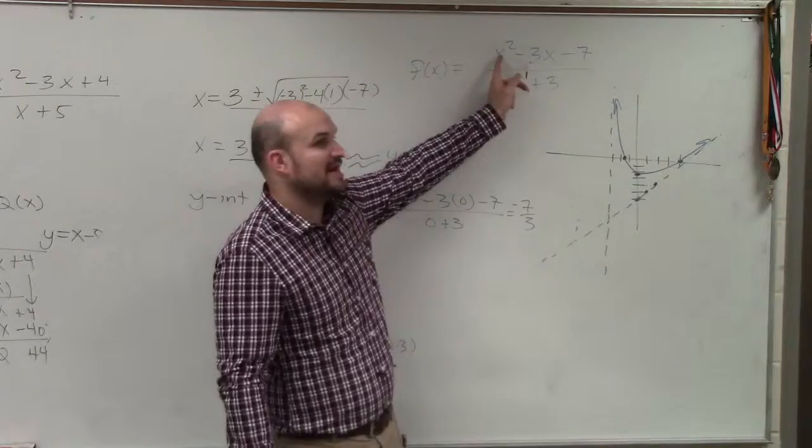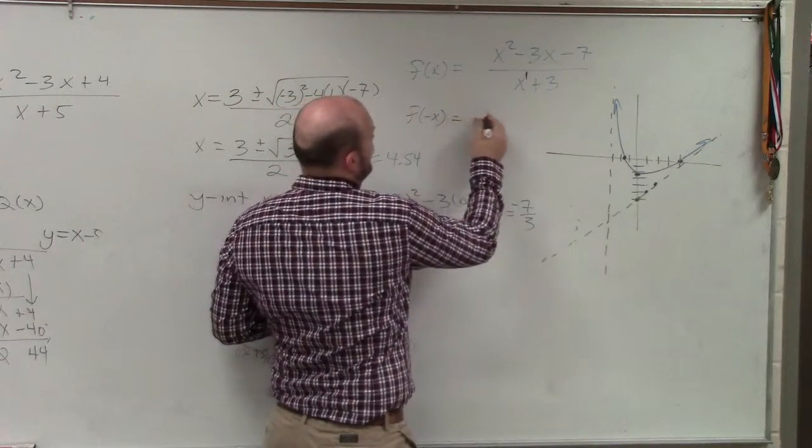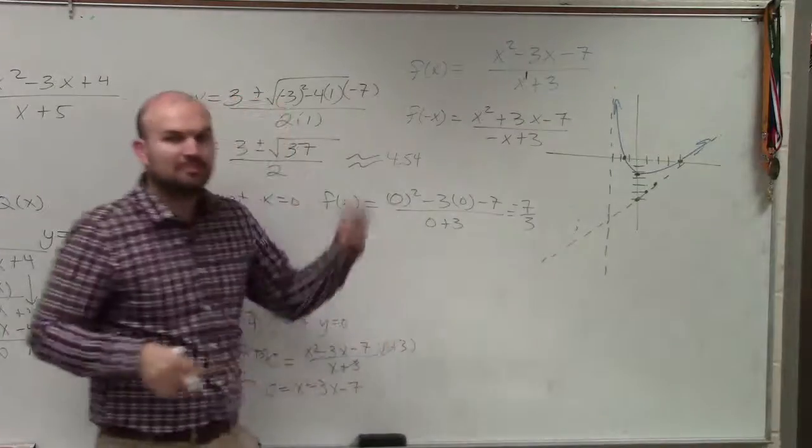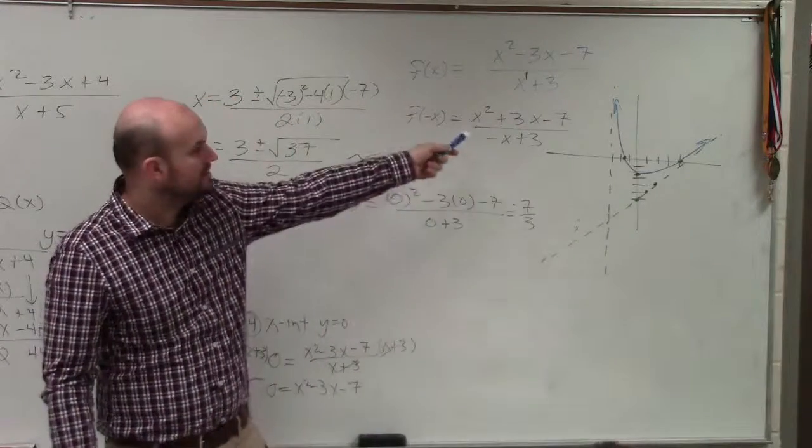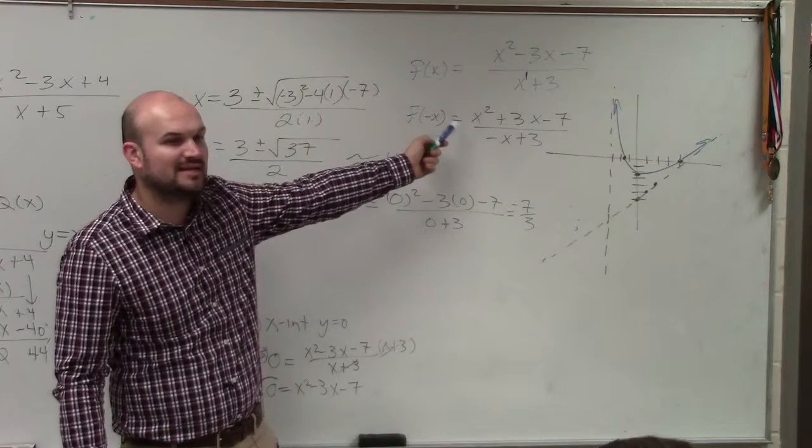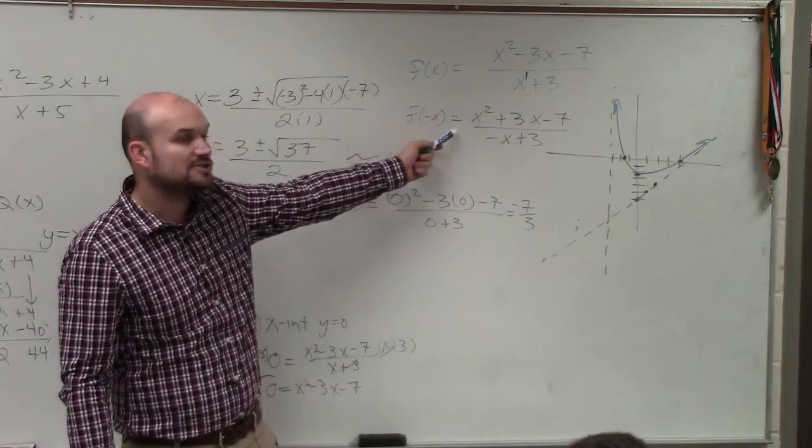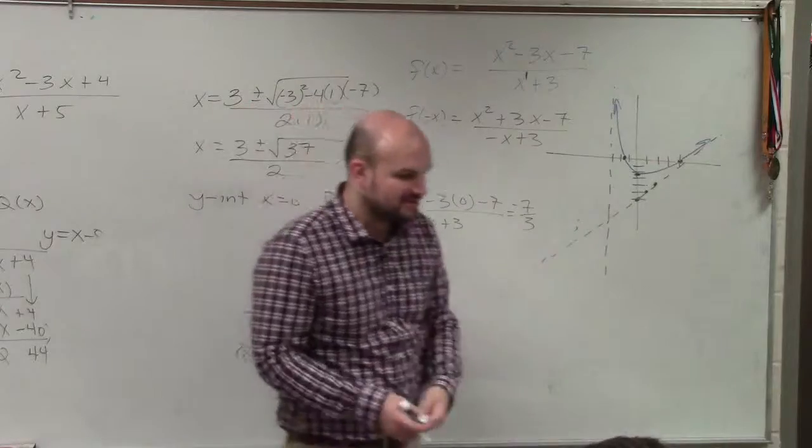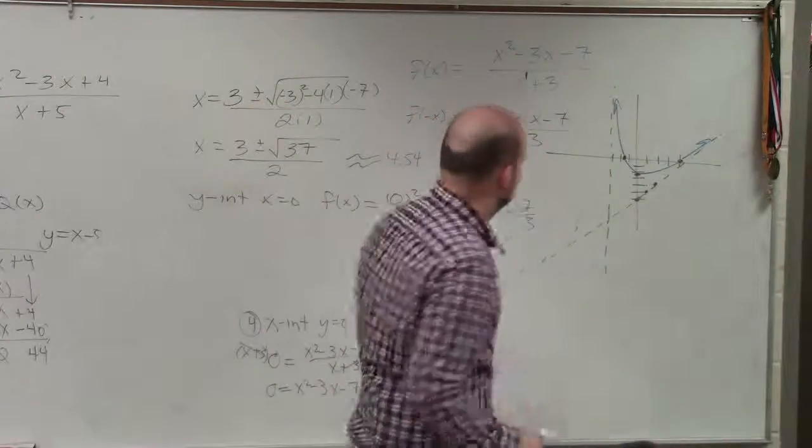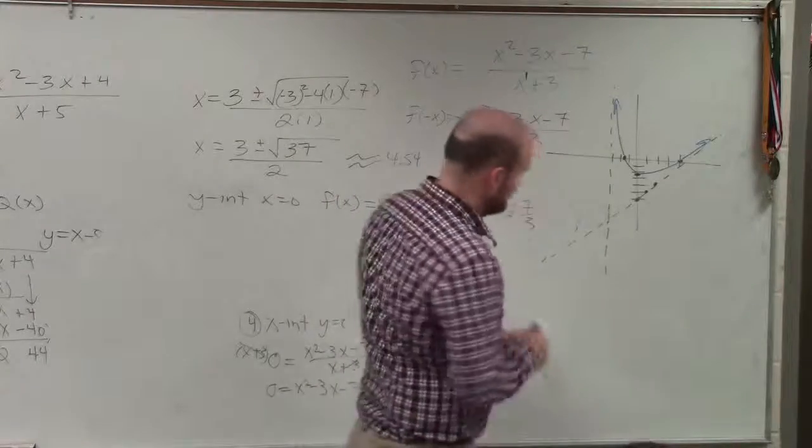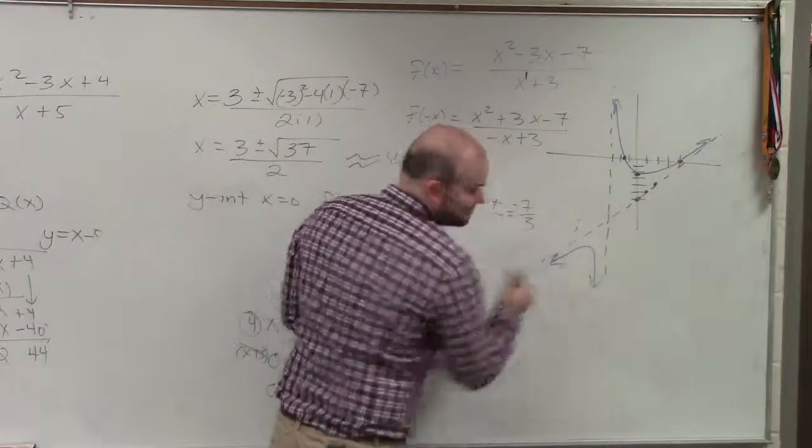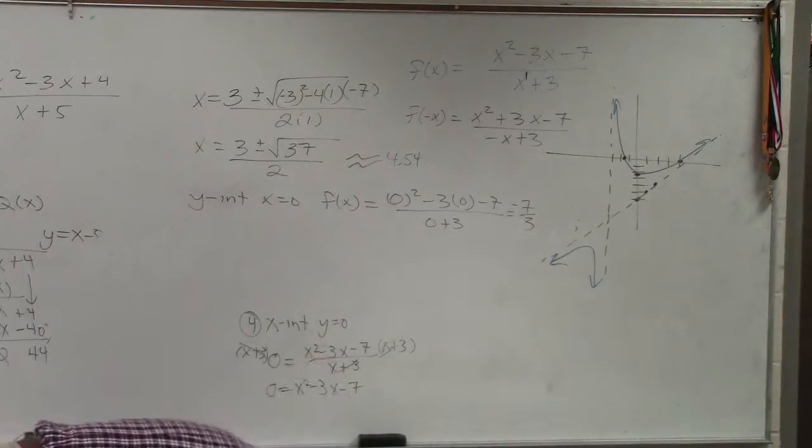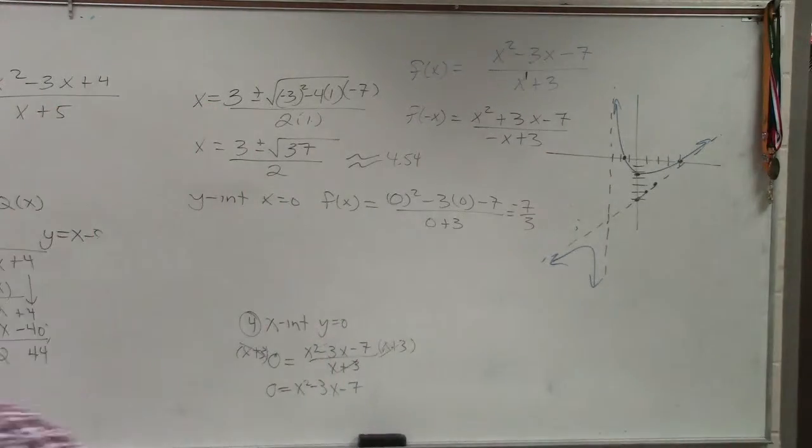If I plug in f of negative x, f of negative x simplified gives me x squared plus 3x minus 7 minus x plus 3. I plugged it in and I simplified it. Is it the same equation? No. Is it the same equation with the opposite signs? No. So there's no symmetry. So now, I could go ahead and plug in these points. Or you could look at your table. Your graph. I caught it with my foot. Alright, you got it?